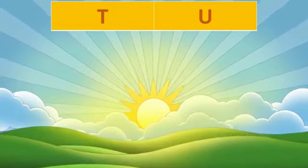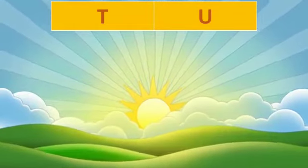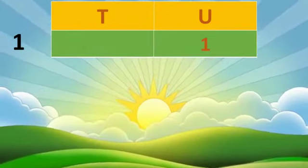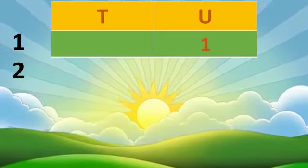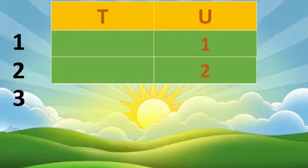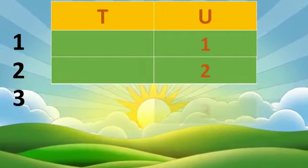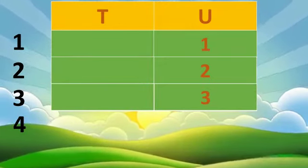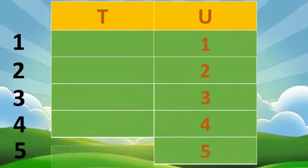You can see number one — one is a one-digit number, so we place one in the units column. Number two is also a one-digit number, so we place two in the units column. Number three goes in the units column because three is also a one-digit number. Four goes in the units column. Five goes in the units column because five is a one-digit number.